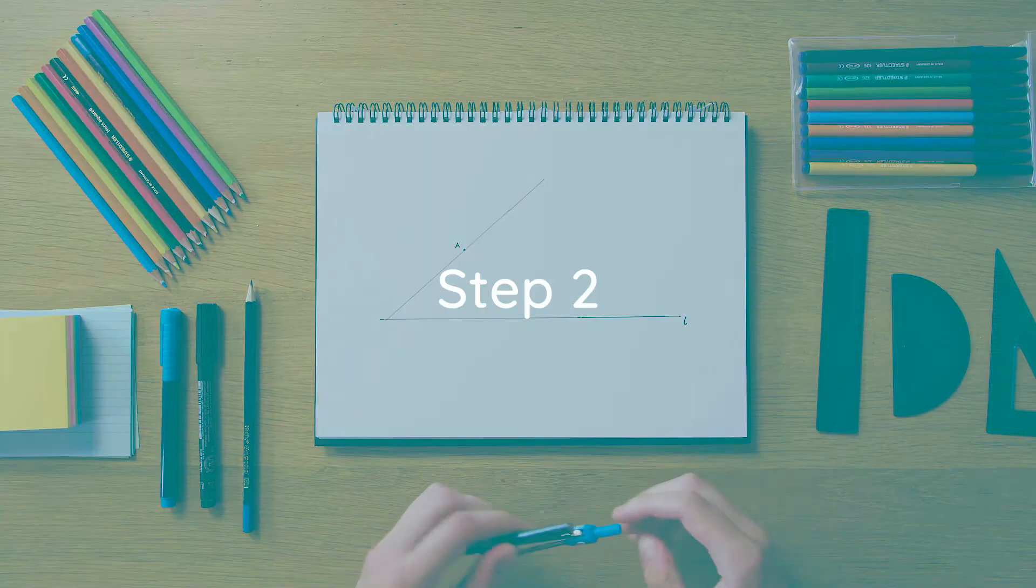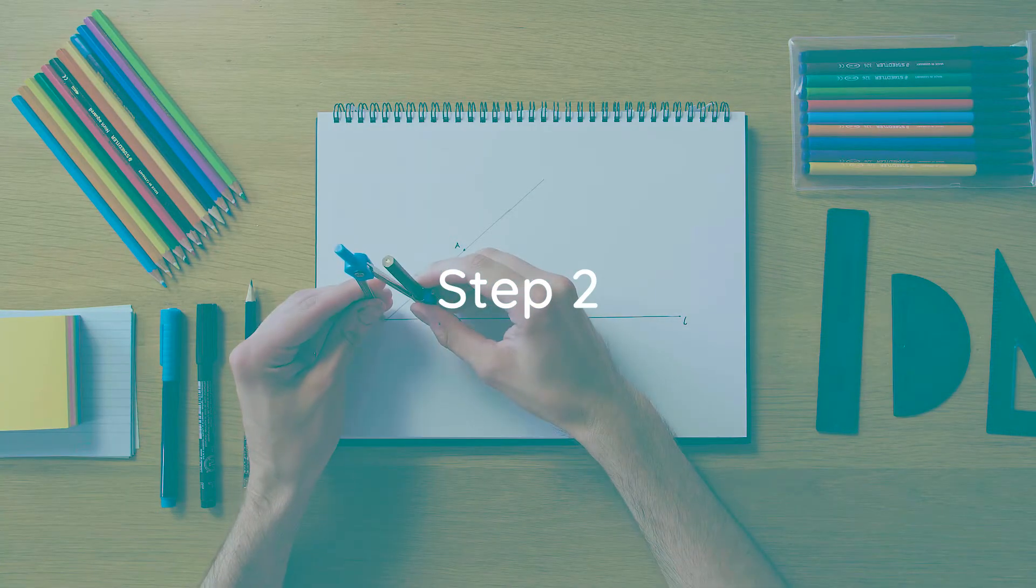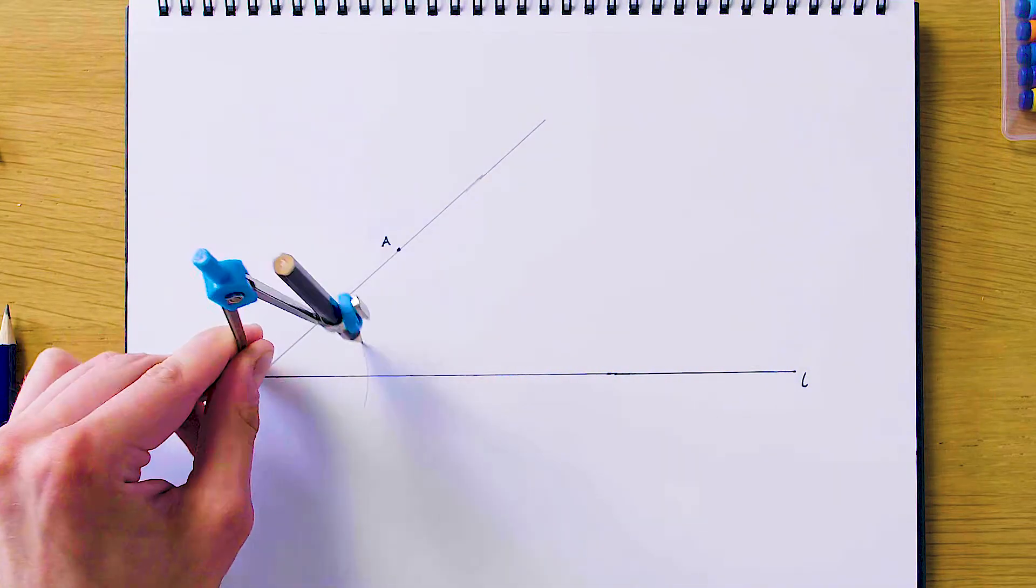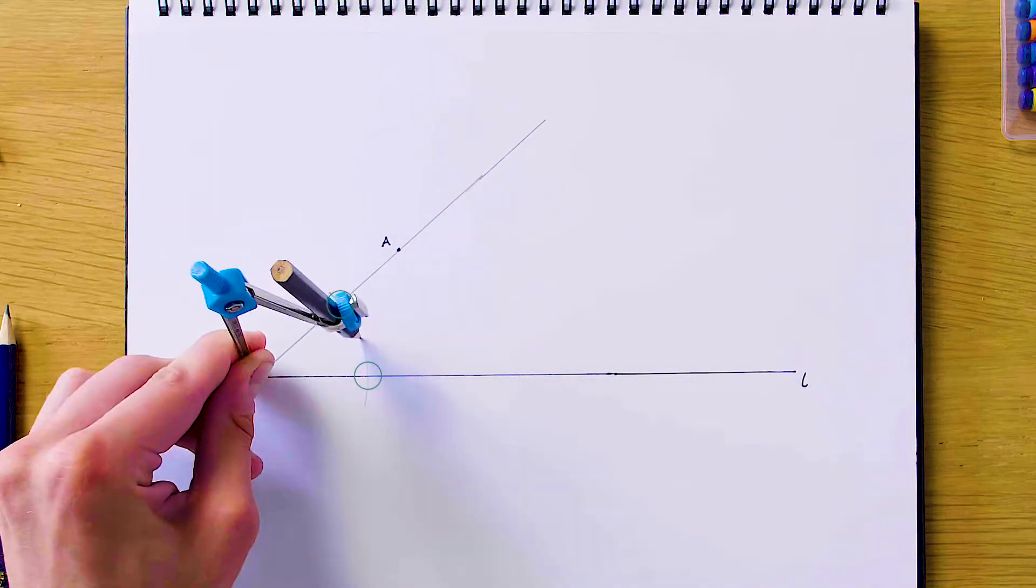And now our second step is going to be to grab the compass and just swing an arc from this point at which the lines cross. So we're just going to swing it up here and make sure it crosses both lines and it's nice and obvious for the examiner as well.